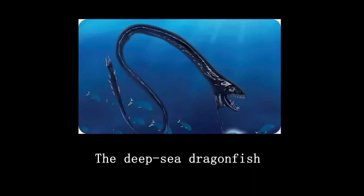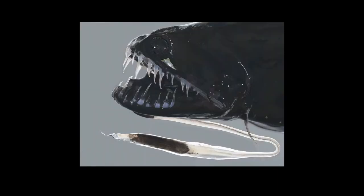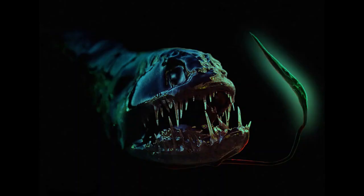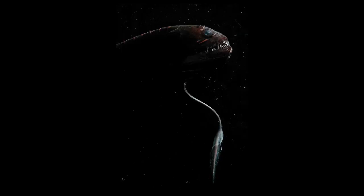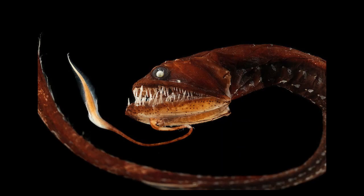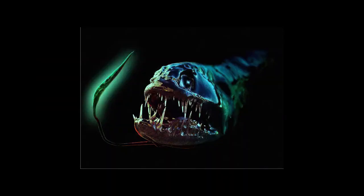The deep sea dragonfish resides at around 1,500 meters. It has a relatively large head with sharp teeth arranged in two rows like spikes. The lower jaw is connected to a bioluminescent lure that constantly flashes and swings to attract prey. Once the prey approaches, the dragonfish uses its sharp teeth to capture it. Its appearance is reminiscent of extraterrestrial creatures from movies.